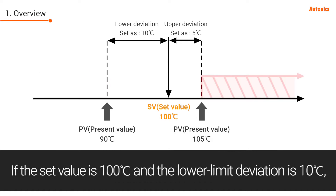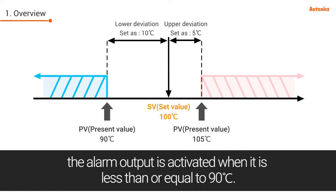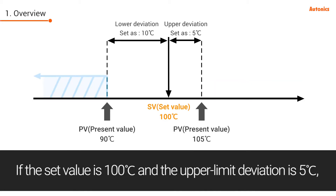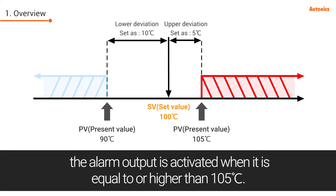If the set value is 100 degrees and the lower limit deviation is 10 degrees, the alarm output is activated when it is less than or equal to 90 degrees. If the set value is 100 degrees and the upper limit deviation is 5 degrees, the alarm output is activated when it is equal to or higher than 105 degrees.